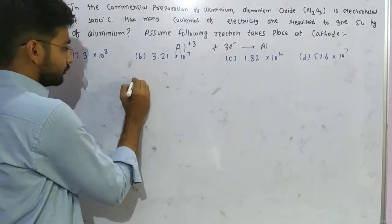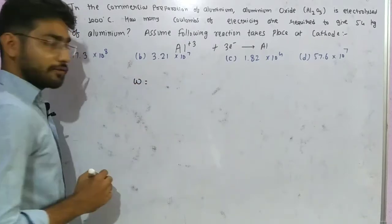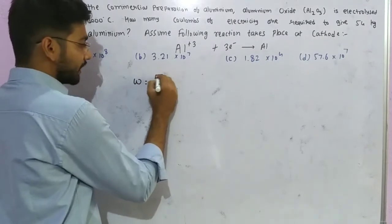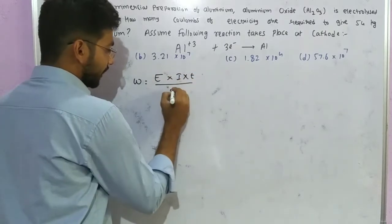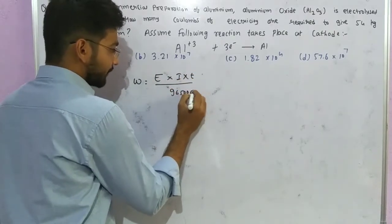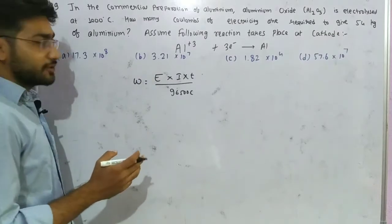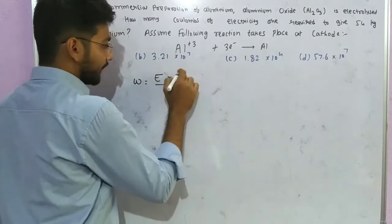Now, the formula is weight equals equivalent mass times charge divided by 96,500. Since we need to calculate charge, it equals current times time, which means we need to calculate the charge in coulombs.